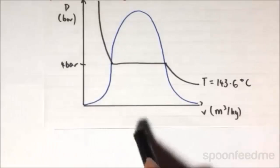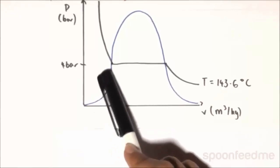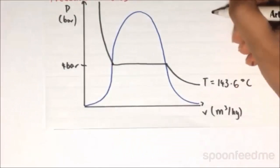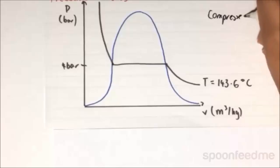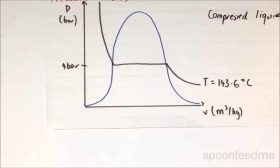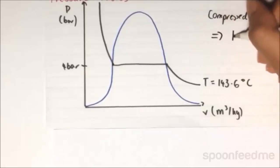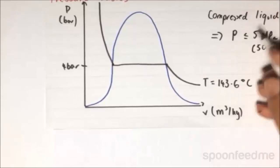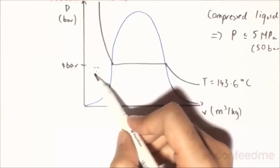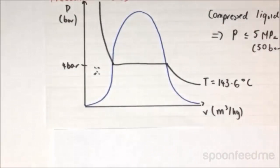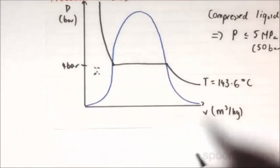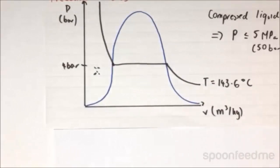Now, recall that this region over here is the compressed liquid region. So what are the thermodynamic properties here? For compressed liquid, if the pressure is less than or equal to 5 megapascals, which is equal to 50 bar, then the properties of the liquid at this stage is just going to be the same as the properties at the saturated liquid line. So the specific volume will be the VF value, and the specific internal energy will be the UF value, and so on and so forth.